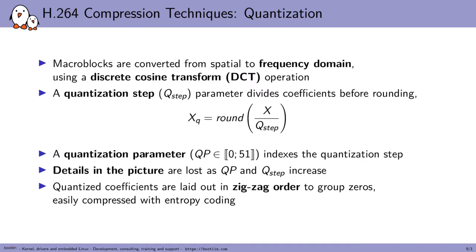Another core compression technique is quantization. Each macroblock is converted into the frequency domain using a Discrete Cosine Transform (DCT). Then a quantization step — a number — is used to divide each frequency-space coefficient before rounding and keeping those quantized values. The bigger the quantization step, the more quality we lose, as we lose information on the frequency-space coefficients. The quantization step is indexed by a quantization parameter (QP), which we use to control the encoding quality.